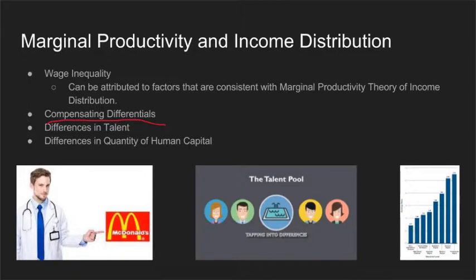Another possible explanation is differences in talent. People who are more talented are more likely to produce higher quality products, which are then in turn more desired. A final possible explanation, which coincides with the marginal productivity theory of income distribution, is the differences in quantity of human capital.